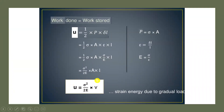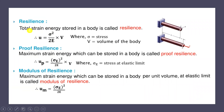This internal strain energy is recoverable when the external load is removed, which is why we are interested in it. Based on this, we define the property called resilience. Resilience is the total strain energy stored in the body. When the material is deformed by an external load, strain energy is stored without causing permanent deformation, and when the load is removed, the material regains its original shape. The formula for resilience is also U = σ² / (2E) × V for a gradually applied load.